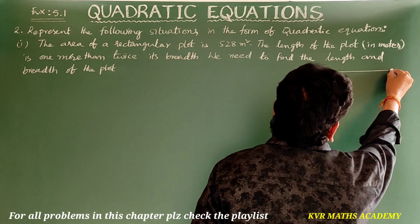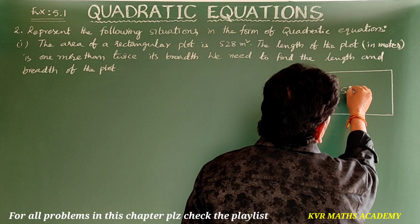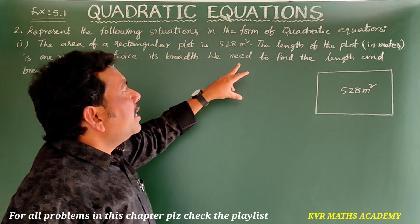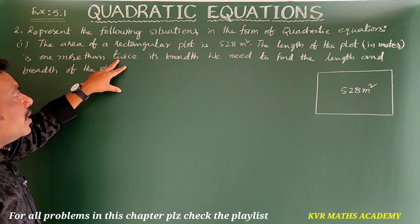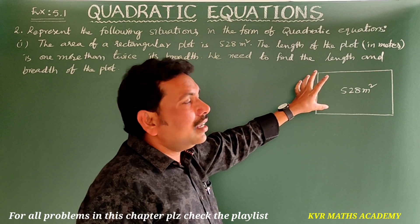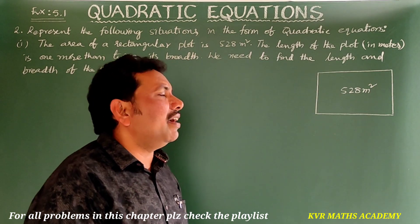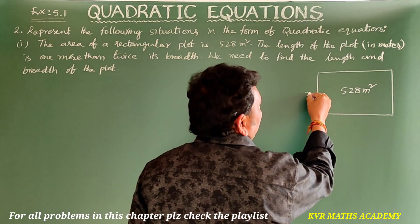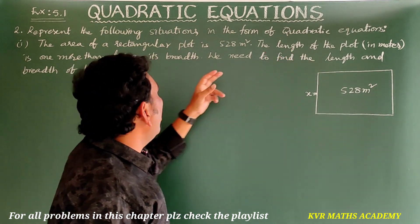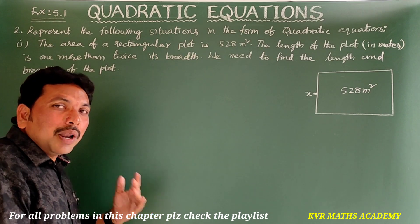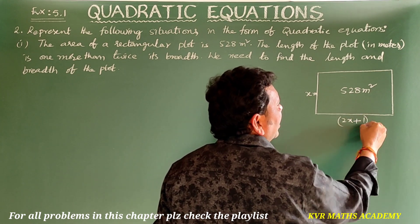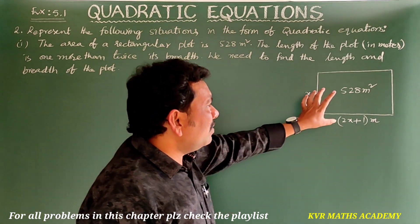A rectangular plot has area 528 square meters. The length of the plot is one more than twice its breadth. Suppose the breadth is x meters. Then the length is one more than twice the breadth, which means 2x, and one more than that means plus 1, so the length is 2x + 1 meters.